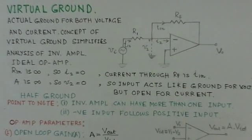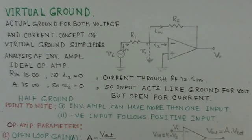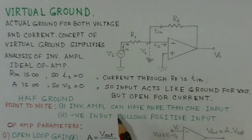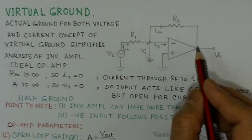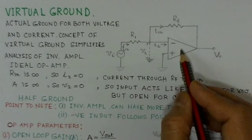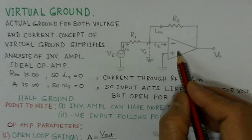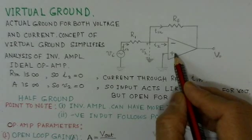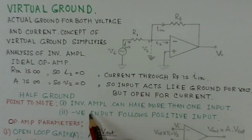Now we will discuss one of the very important properties of operational amplifiers: virtual ground. We will illustrate this concept through an inverting amplifier. The concept of virtual ground is very important with respect to inverting amplifier circuits. We presume that the operational amplifier is an ideal op-amp.